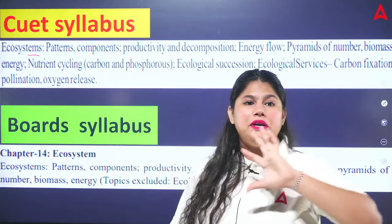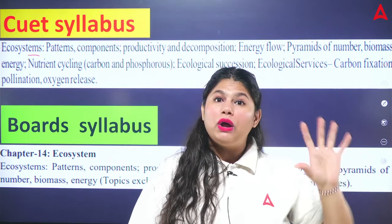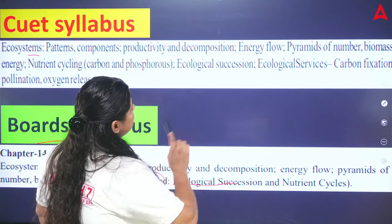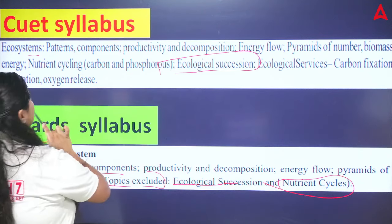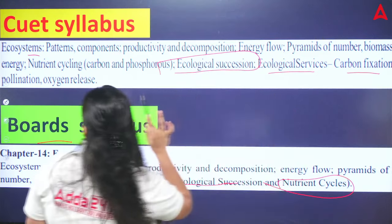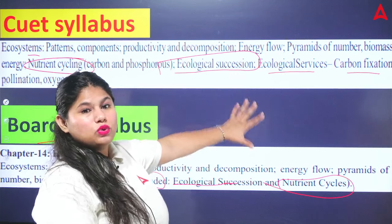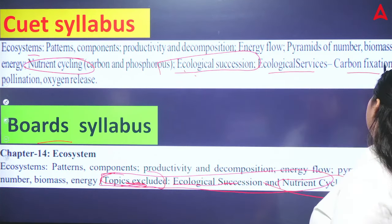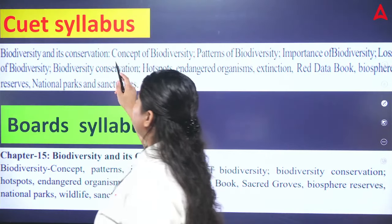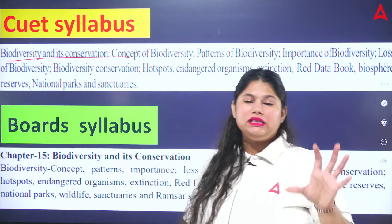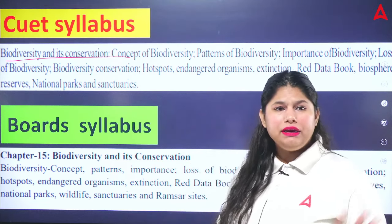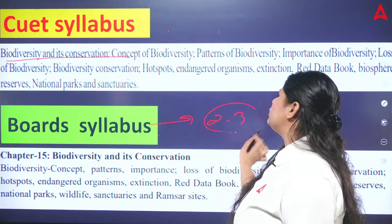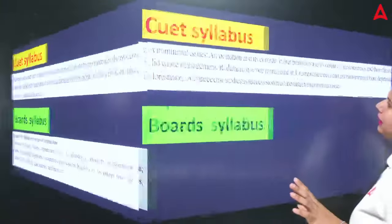Ecosystem is going to be a complete unit — we are not going to leave a single thing in the whole chapter. Ecological Succession is included. Nutrient cycling, carbon fixation, and nutrient cycling complete — these are in both board and CUT and are important. In the board, 2-3 MCQ questions come from this every year. Environmental Issues — this whole chapter is not in the board.